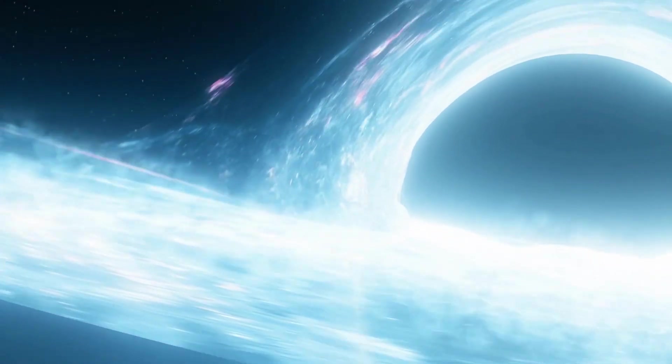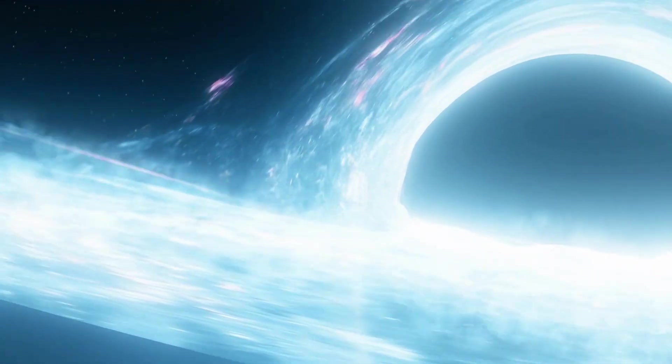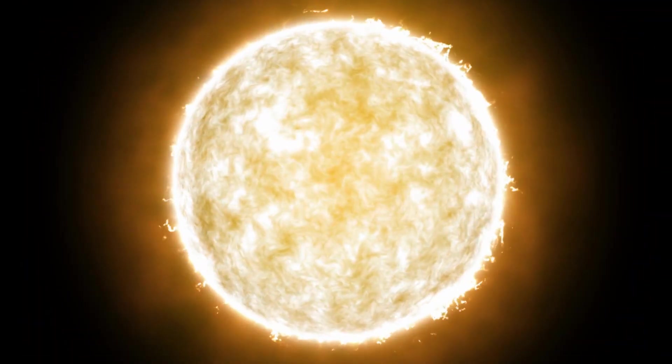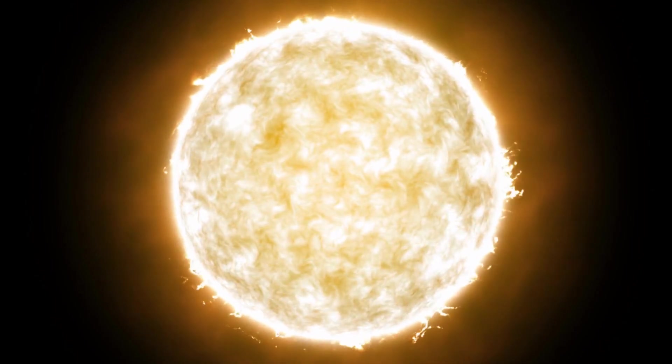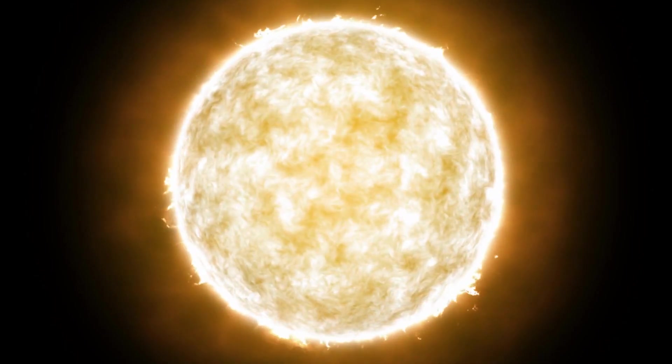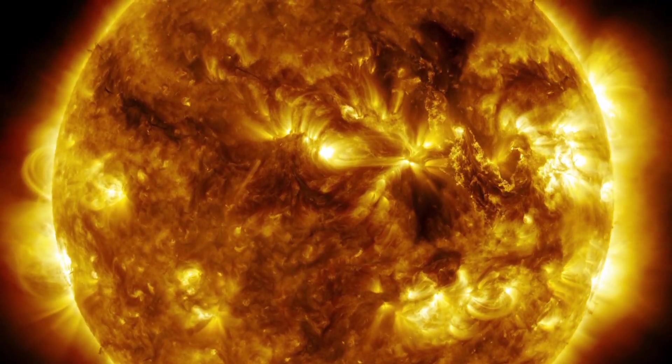To understand how black holes form and what happens inside them, it is necessary to go back to the life cycle of a massive star. These massive stars are true cosmic powerhouses fueled by the incredible nuclear fusion reactions that take place in their cores. The sun's energy source comes from the fusion of hydrogen into helium.